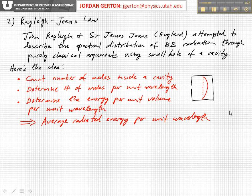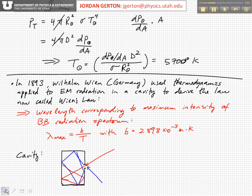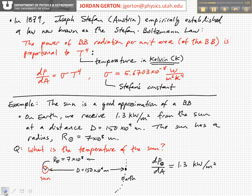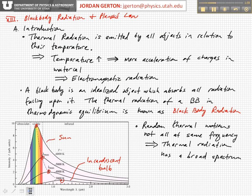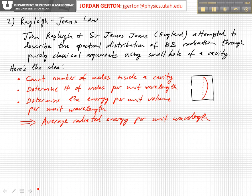In the early 1900s, two British physicists — John Rayleigh and Sir James Jeans, both from England — basically attempted to describe the spectral distribution of black body radiation: this peaked distribution with a very particular shape. They attempted to describe that black body spectrum using purely classical physics, purely classical arguments, by considering a cavity and the hole in the cavity as basically the black body.